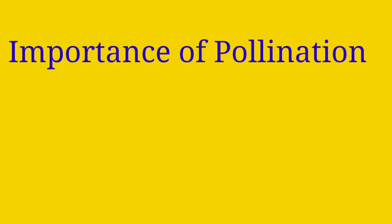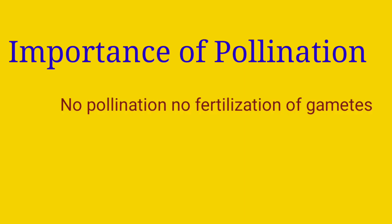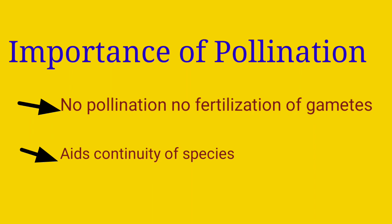Now let's see the importance of pollination. Pollination is the only method without which sexual reproduction cannot take place. Pollination helps to donate male gametes from the male reproductive part to the female reproductive part, where they can restore the diploid chromosome number by the fusion of gametes. If the gametes fuse, a zygote is formed, and from the zygote a new organism will form with the help of the embryo, helping in the continuity of a particular species.